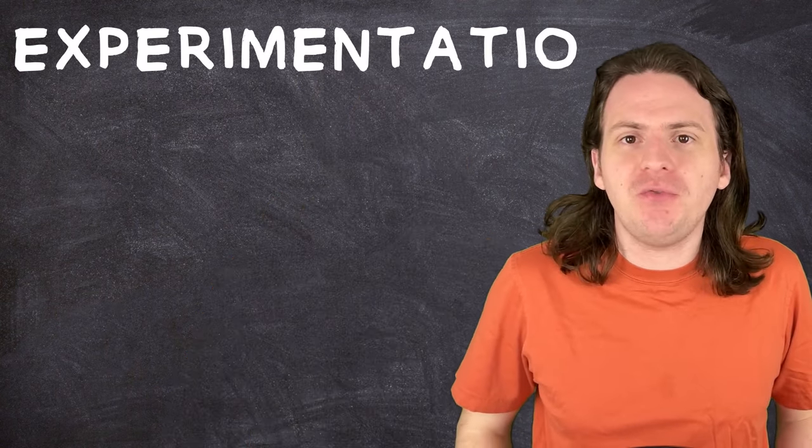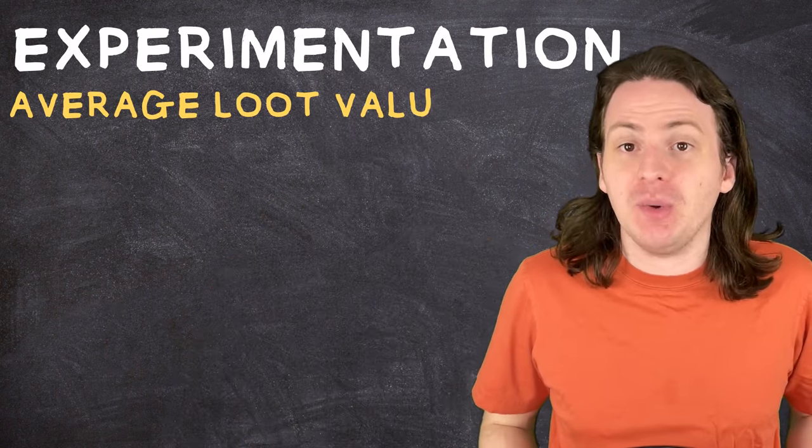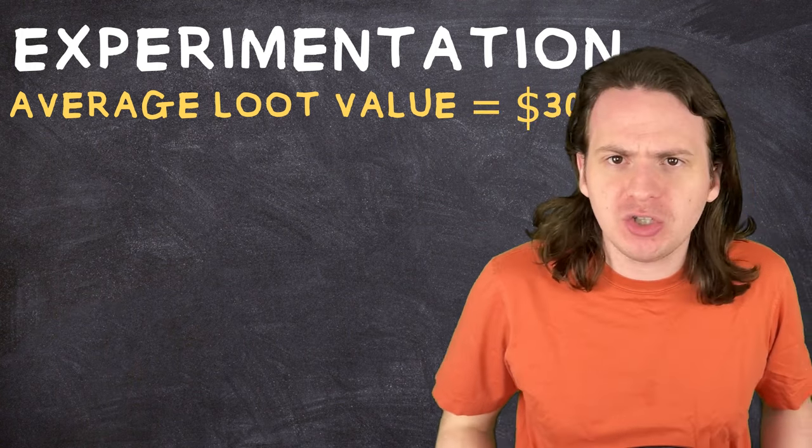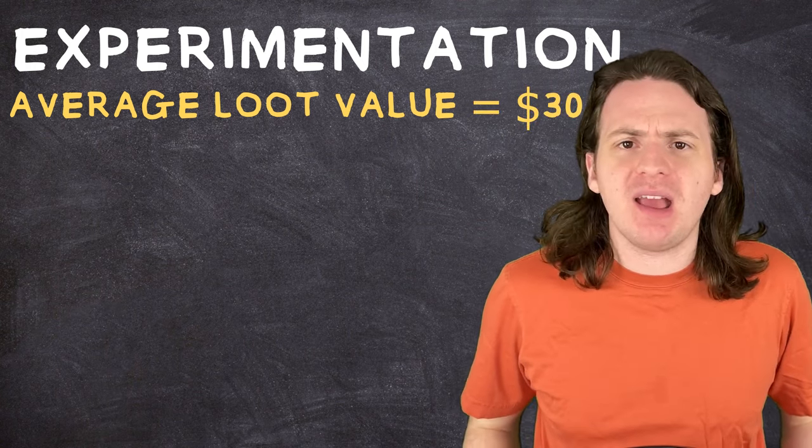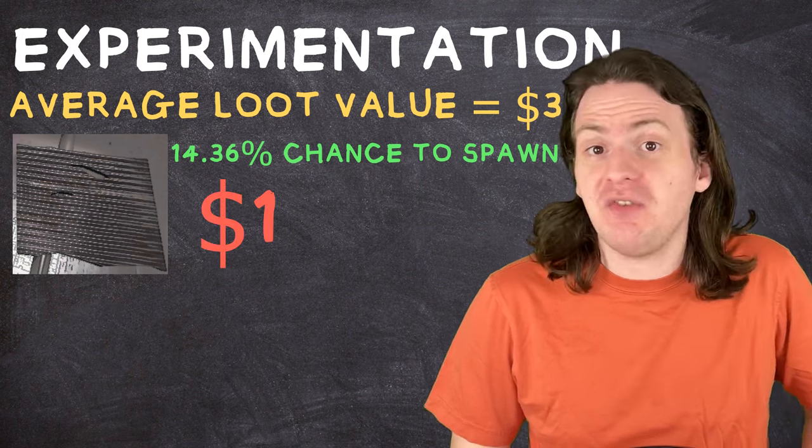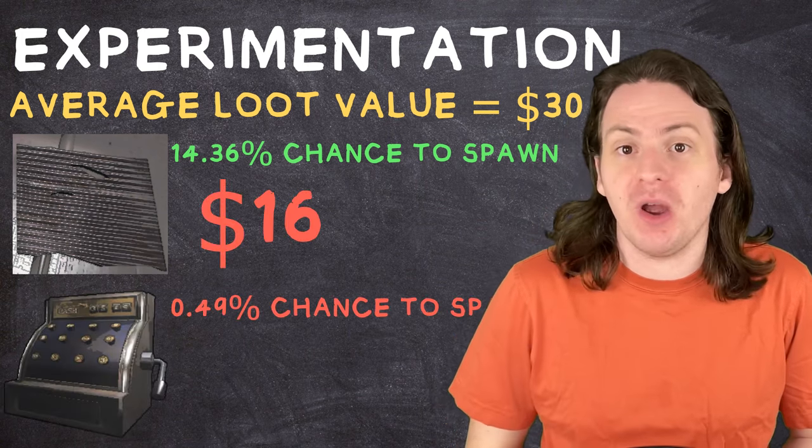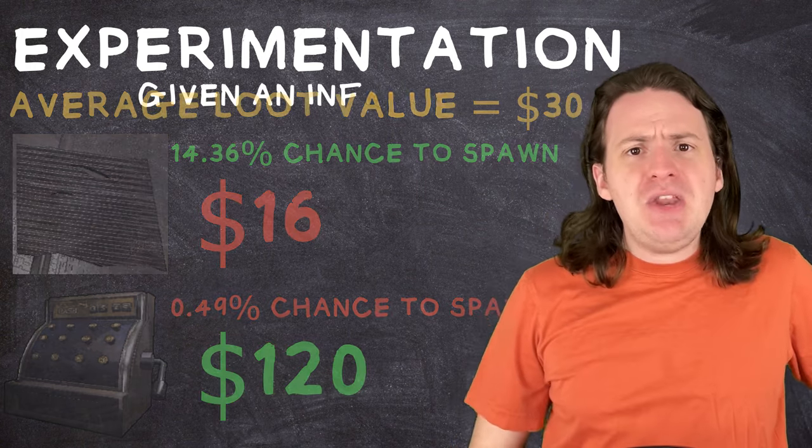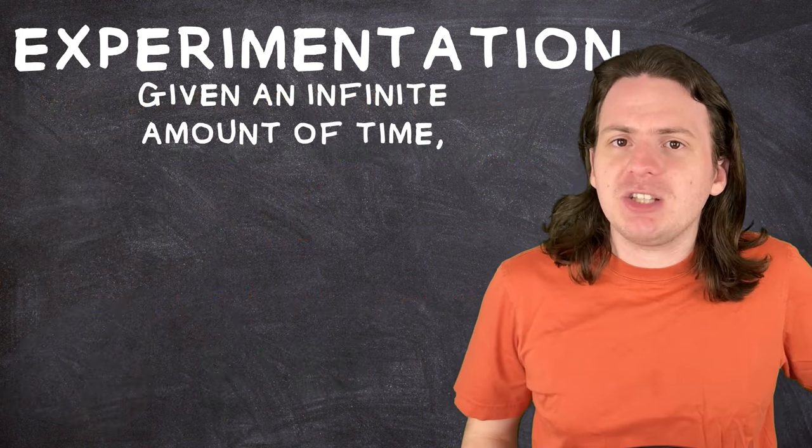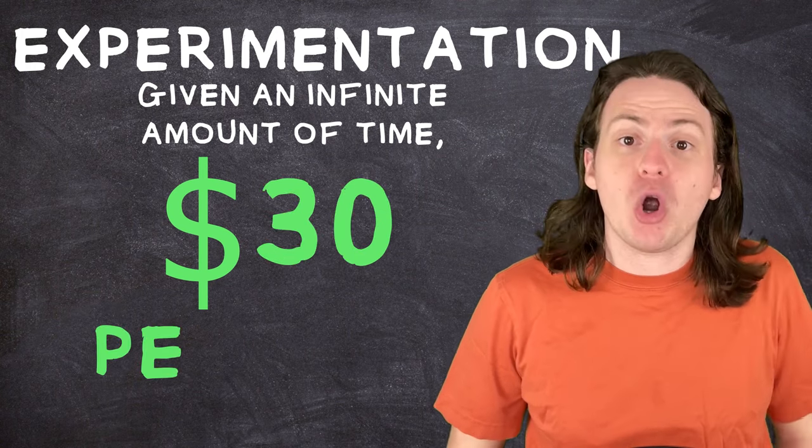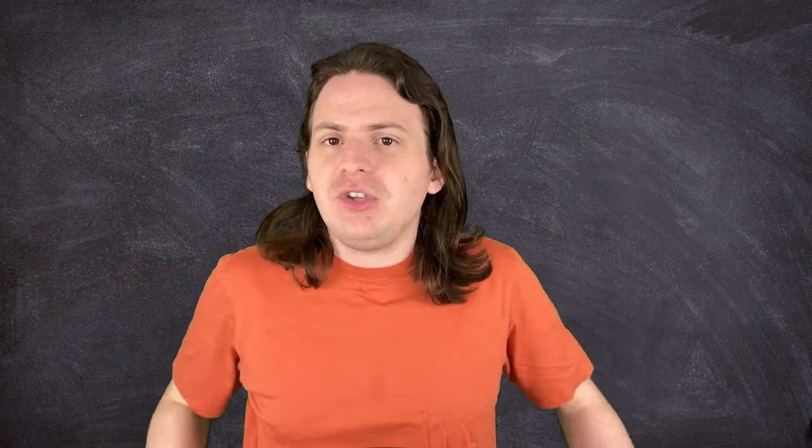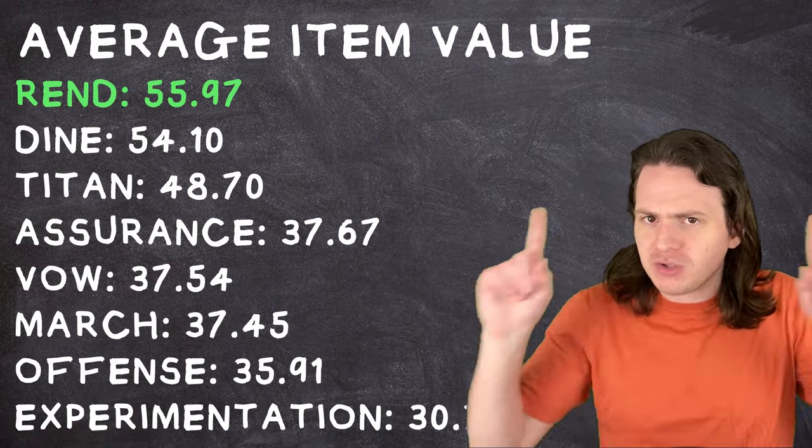So as an example, doing this on experimentation, you'll find that the average loot value is $30. Sure, more common items like the metal sheets are worth significantly less, but there are rarer items like the cash register that are worth a lot more. So given an infinite amount of time, you can expect to make $30 per item you bring back. If you do this for every moon, then you'll find that Rend is the best, but there's one problem.